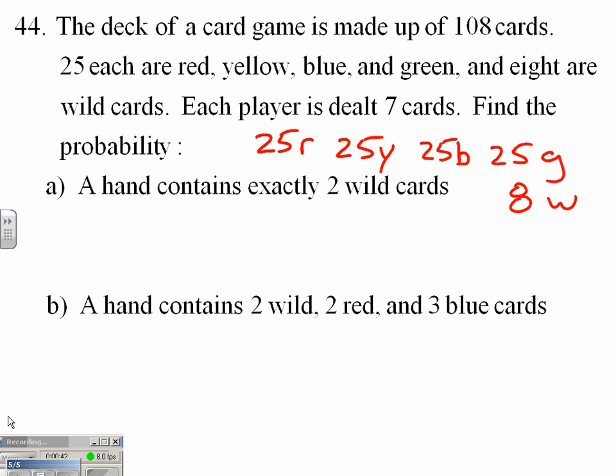Now the author in the setup for this problem, in the instructions, partitioned this set of 108 cards into 5 groups. But this problem, problem A, really is only talking about 2 partitions. We have 108 cards that can be classified either wild or not wild.